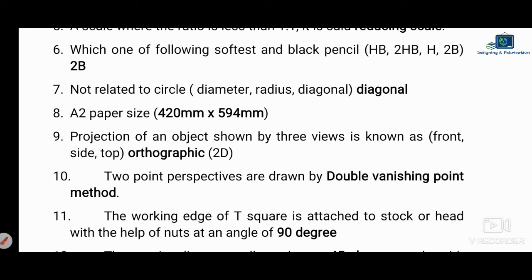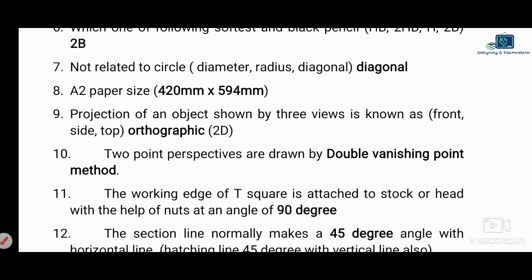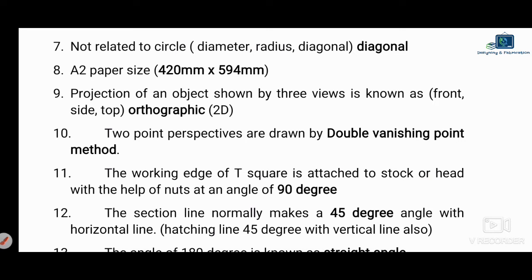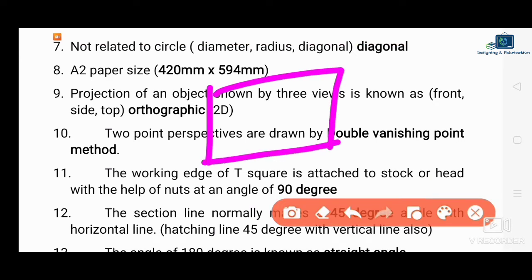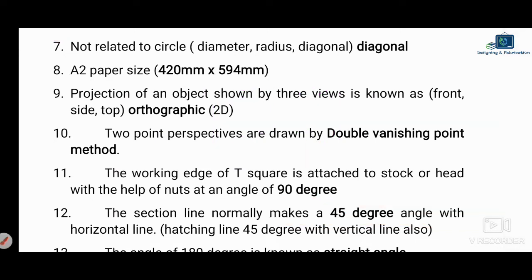Next question: which term is NOT related to a circle? The options include diameter, radius — both related to a circle. Diagonal is related to a rectangle, not a circle. So the correct answer is DIAGONAL — it is not related to a circle.